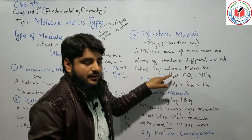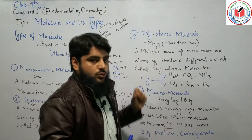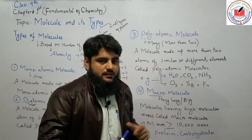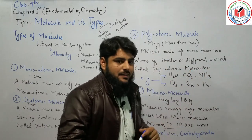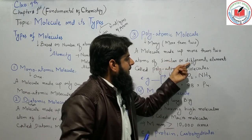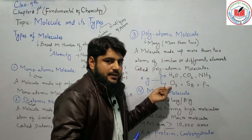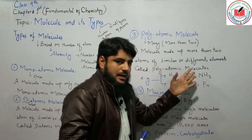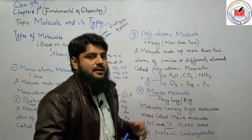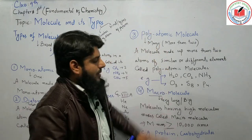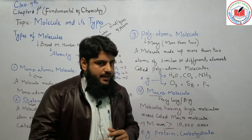Water has three atoms: two hydrogen and one oxygen. Carbon dioxide has three atoms: one carbon and two oxygen. Ammonia has four atoms: one nitrogen and three hydrogen. Ozone (O3) is also a polyatomic molecule. These are classified as polyatomic molecules.